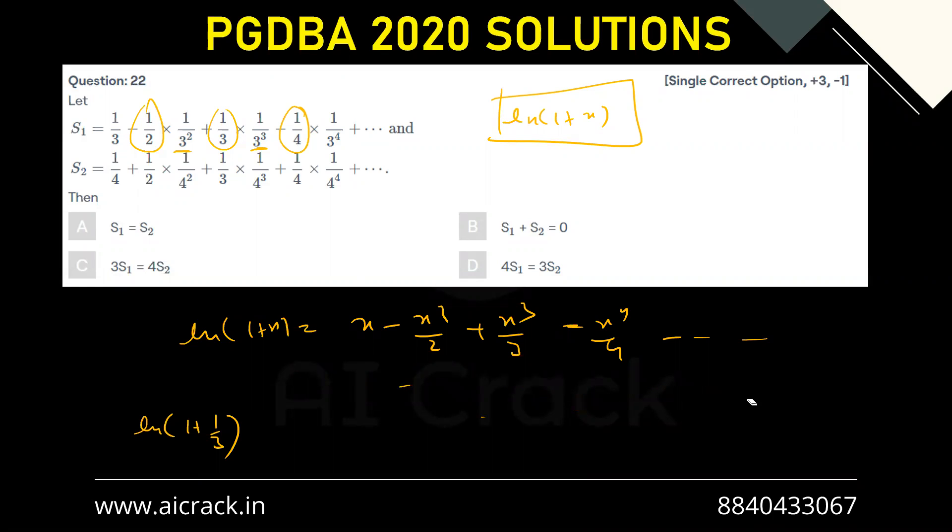So the first series S1 came out to be ln(4/3). Now in case of second series...